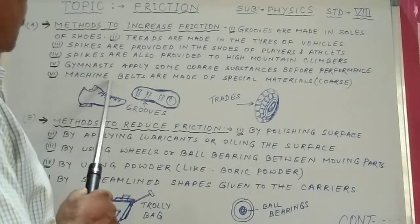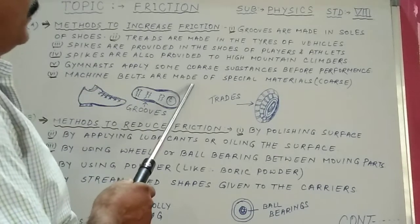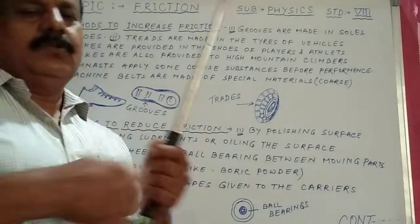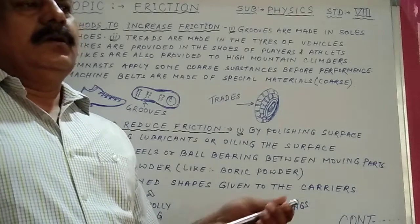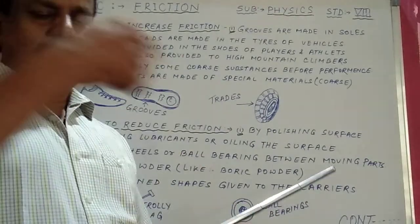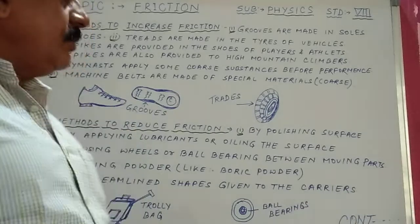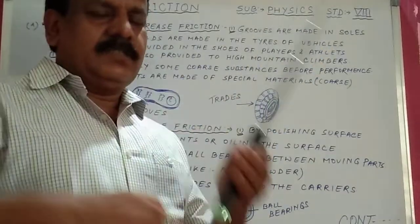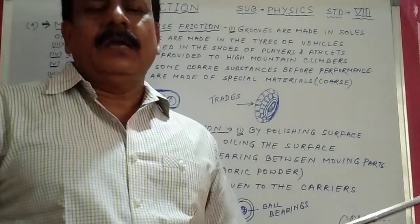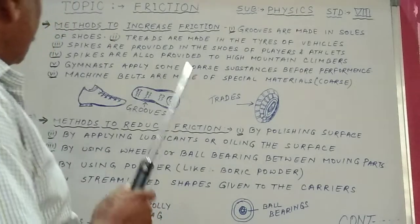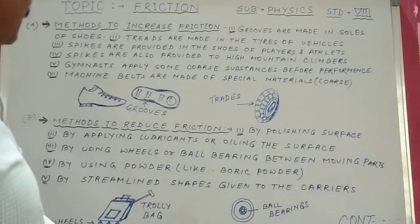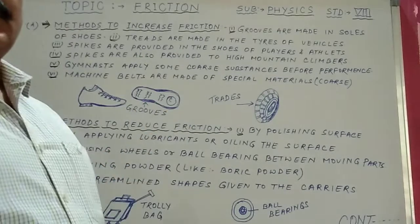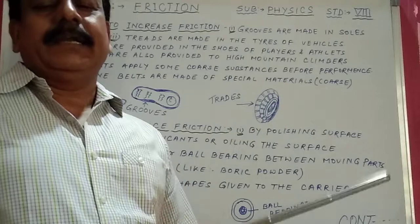Point six: machine belts are made of special coarse materials. Machines running on belts — like flour mill machines — have belts made of special coarse materials to increase friction and help move the machines properly. These are the six methods to increase friction.